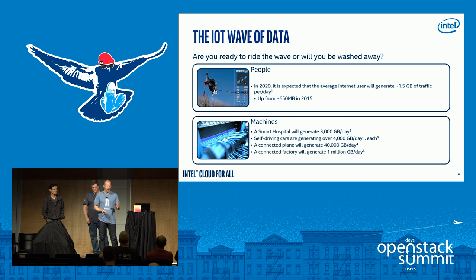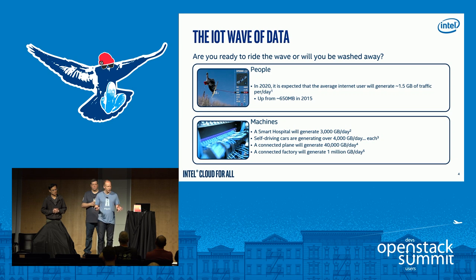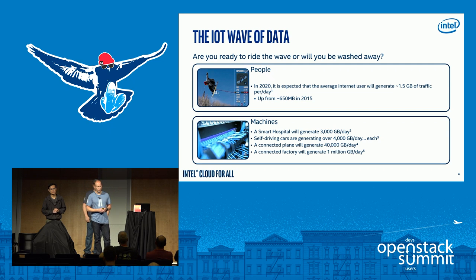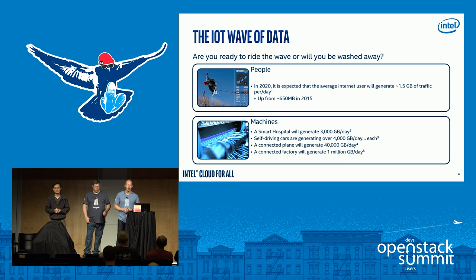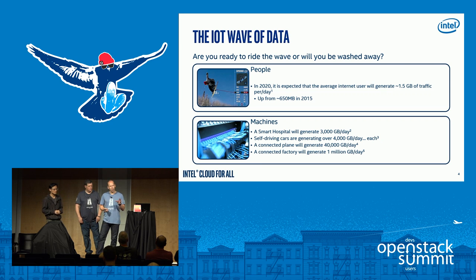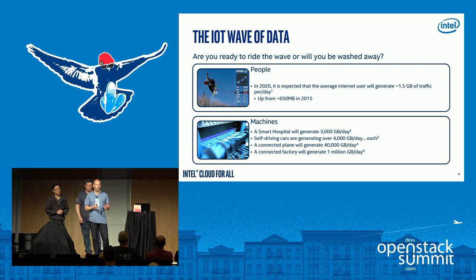Self-driving cars require detailed analytics — cameras and processing for hazard detection, at the edge versus in the cloud. Factories generate one million gigabits a day. Looking at all that machine communication, machine-to-machine traffic is projected to be about 40% of internet traffic by 2020. That's the start of the rise of the machines.